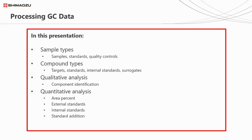In the last session, we looked at the different detectors available. So in this session, we're going to be looking at how we process the data they generate. Before we look at how the data is processed, I want to take a few minutes to look at the different sample and compound types that we typically encounter in GC analysis.